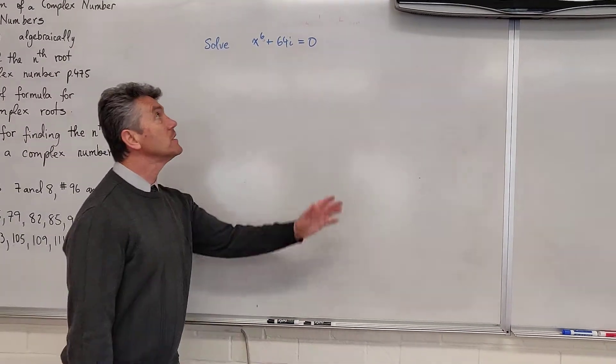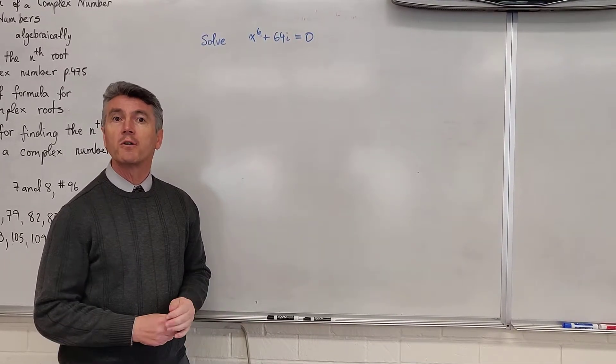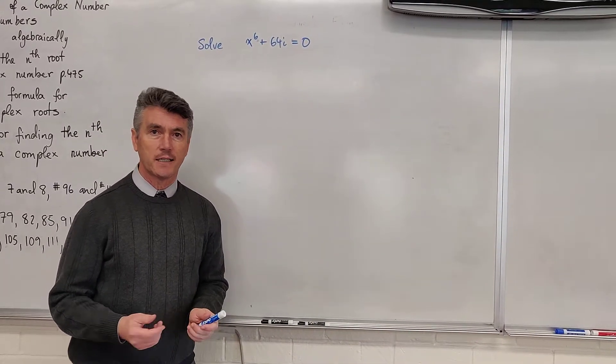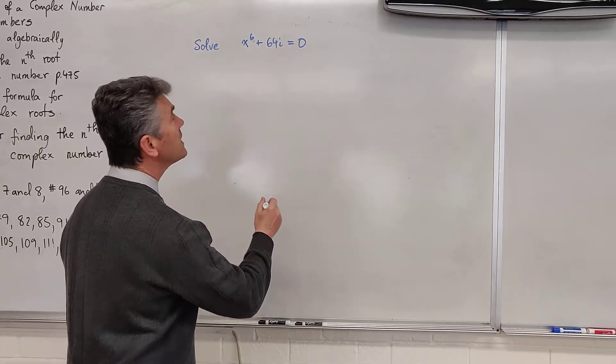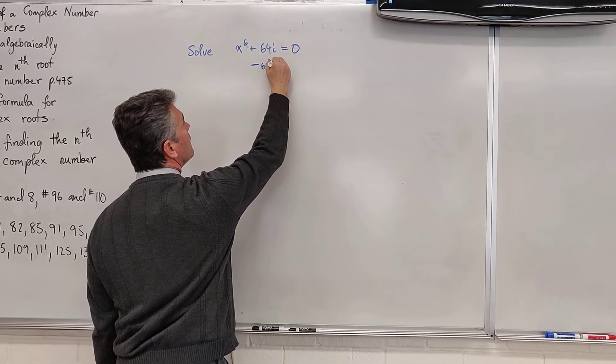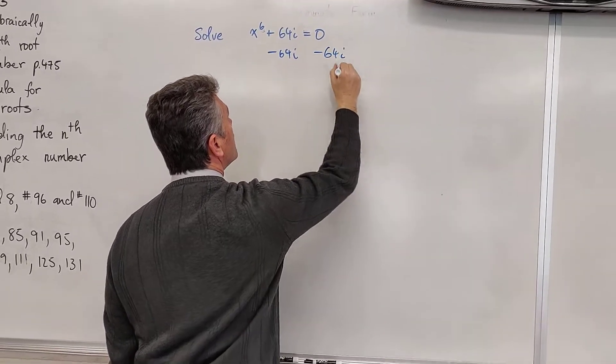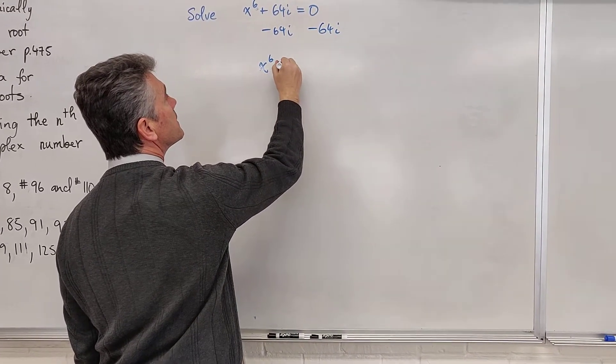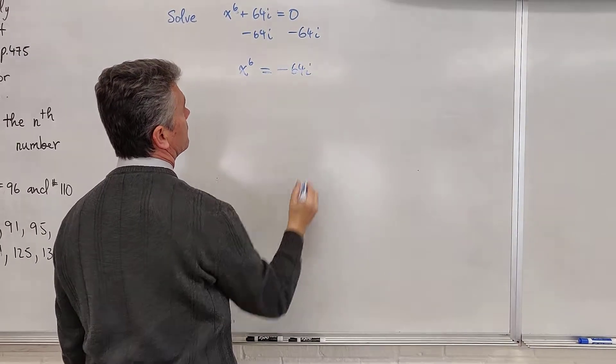The first thing that we notice, this is a 6 degree binomial. If it's a 6 degree binomial, it means that we're looking for 6 solutions. What do we do next? We're going to subtract 64i from both sides. And we notice that we have x to the 6 is equal to negative 64i.